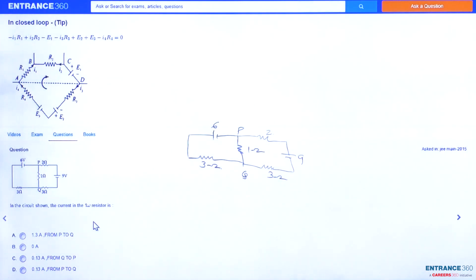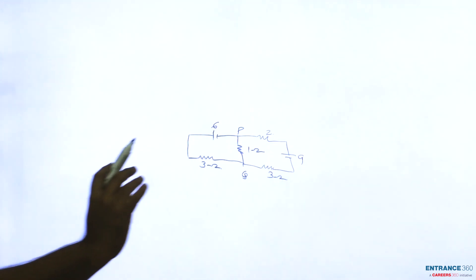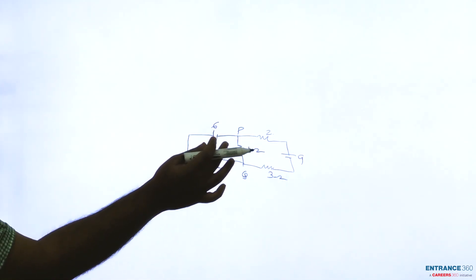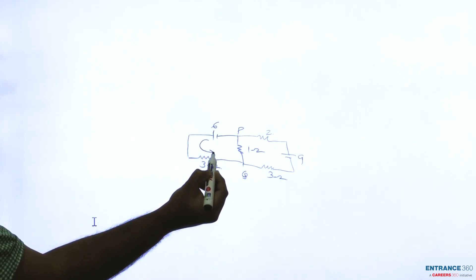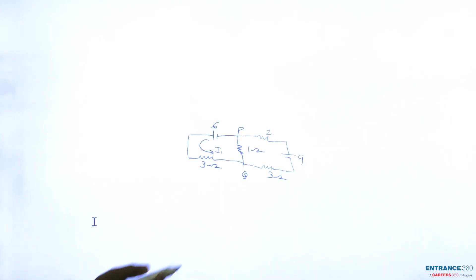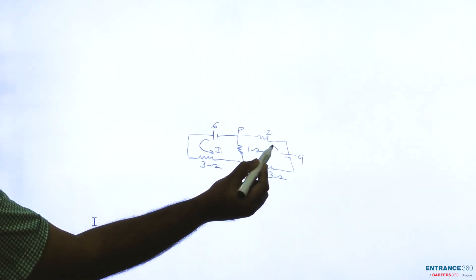So to solve this question we can apply Kirchhoff's voltage loop. Let's say the current flowing in this first loop be I1, and current flowing in second loop be I2.